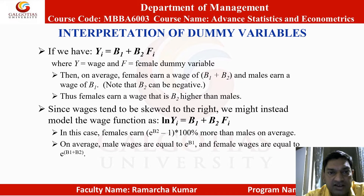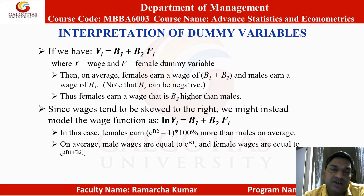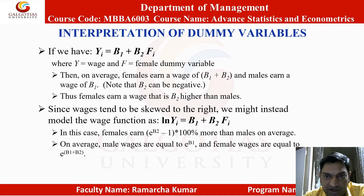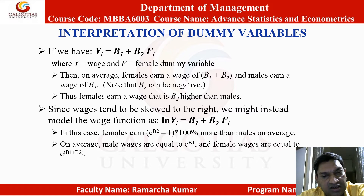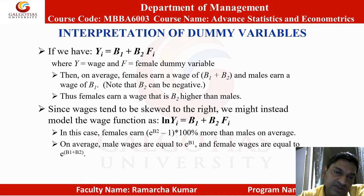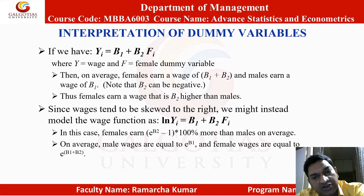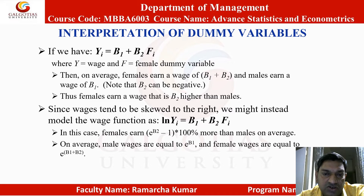If we have yi = b1 + b2 * fi, where yi is wage and f is the female dummy variable, then on average females earn a wage of b1 + b2 and males earn a wage of b1. Note that b2 can be negative; thus females earn a wage of b2 higher than males. Since wages tend to be skewed to the right, we might instead model the wage function as ln(yi) = b1 + b2 * fi. In this case, females earn exp(b2) - 1 times 100% more than males on average. Male wages are equal to e raised to the power b1, and female wages are equal to e raised to the power b1 + b2.